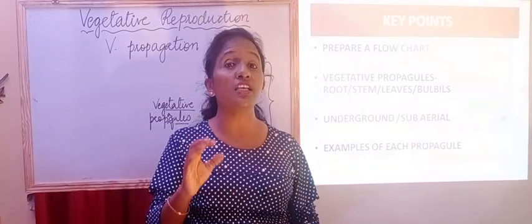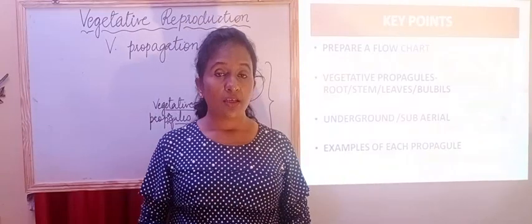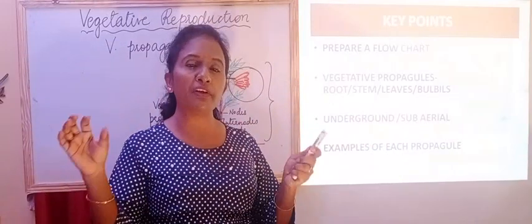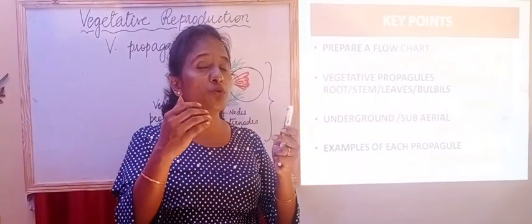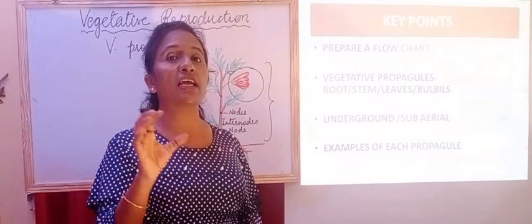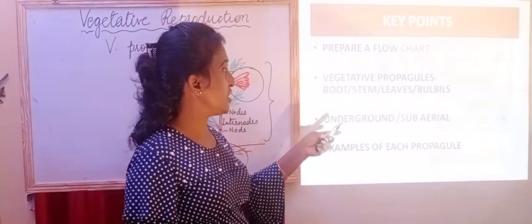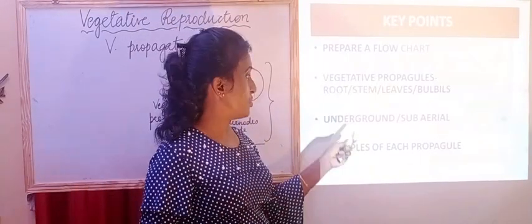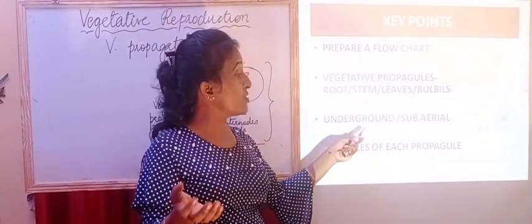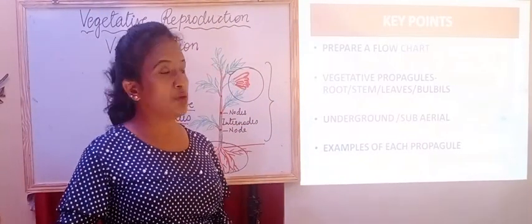We will see what are the key points which we should remember. First, prepare a flow chart — it is very good so that you will get all the types of vegetative propagules and the examples under each type of natural method used in propagation. Then remember which are the propagules: whether they are roots, stem, leaves or bulbils. Then whether these propagules are underground or sub-aerial. And the examples of each propagule we should remember.